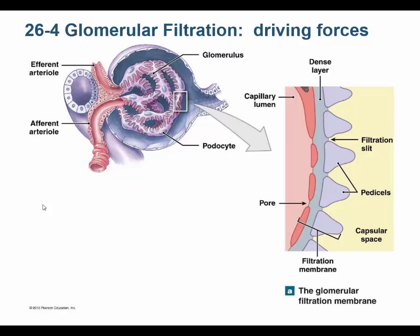This shows the filtration membrane again. The fenestra are 90 nanometers across. Then there's a negatively charged basement membrane that repels anything negative, like proteins. Then there's a nine nanometer filtration slit. If they're greater than 90 nanometers they don't get through the fenestra; if greater than nine nanometers they don't get through the filtration slit; if negatively charged they're repelled. If they pass all barriers, they end up in Bowman's capsule.